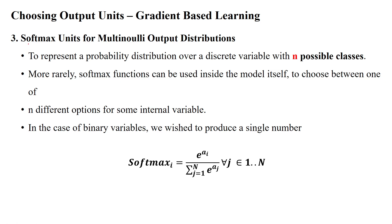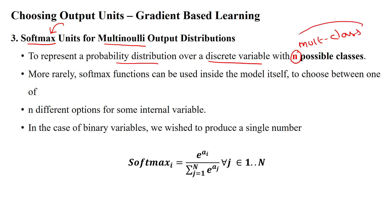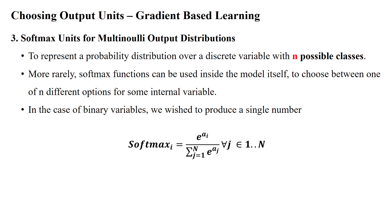The third type is softmax units, used in the output layer for multi-class classification. Softmax represents a probability distribution over discrete variables — that is, classification with n number of possible classes. It is not limited to binary classification; it supports multi-class classification with n possible classes. Softmax functions can also be used inside the model itself to choose between one of n different options for some internal variable.